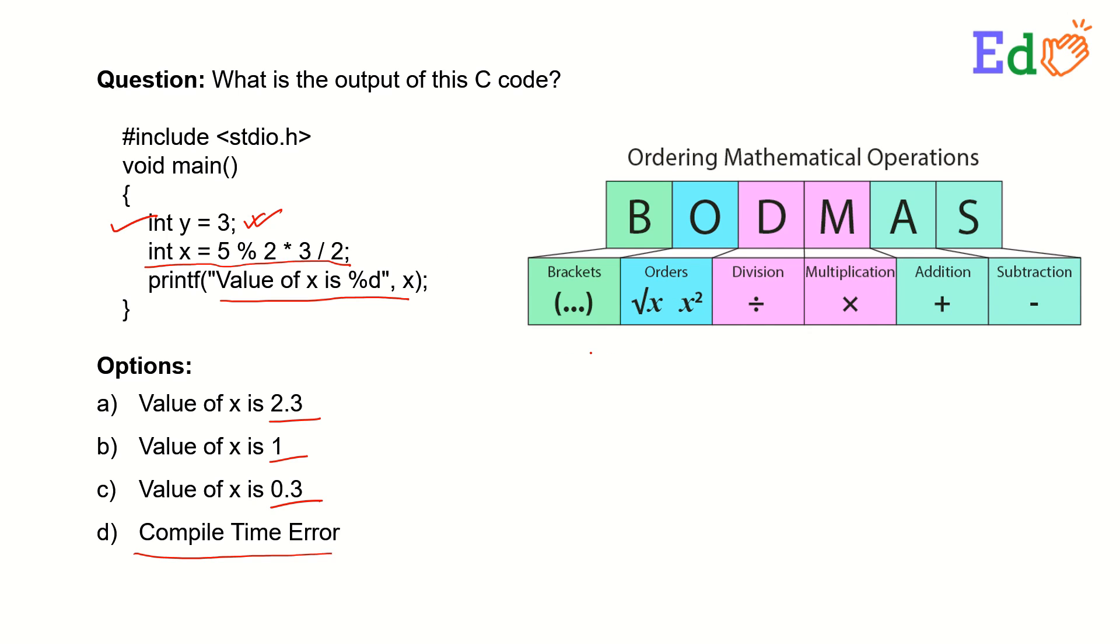Let's try with this example which is given to us: x equals 5 modulo 2, then multiplied by 3, then divided by 2. This is the equation we have given to us. As per this rule, the modulo division will work first. So the modulo division, the remainder will be 1, then multiply by 3, then divided by 2.